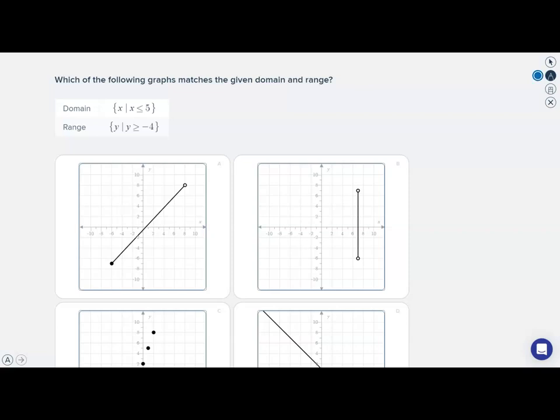So for our domain, we are looking for values of x that are less than or equal to 5, and for our range, we are looking for values of y that are greater than or equal to negative 4.